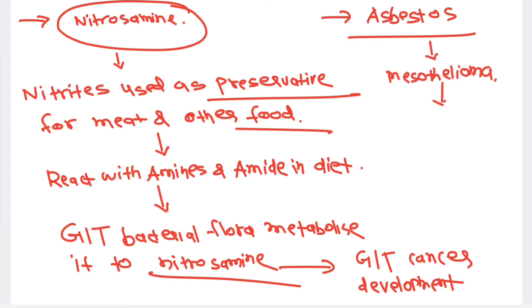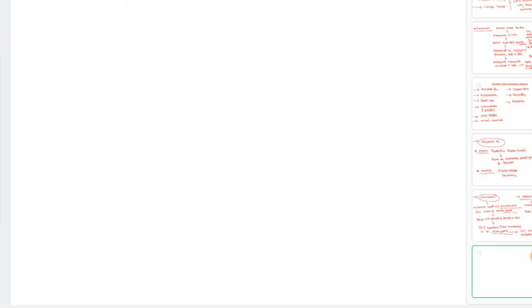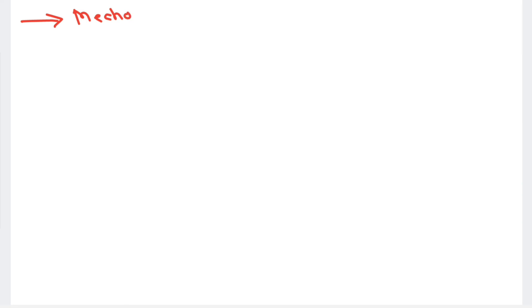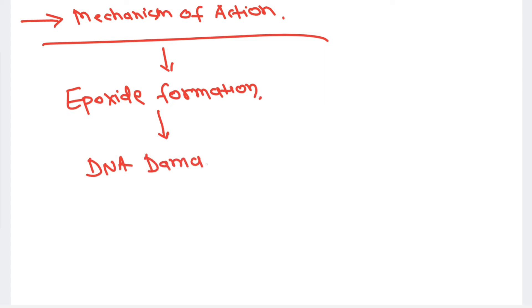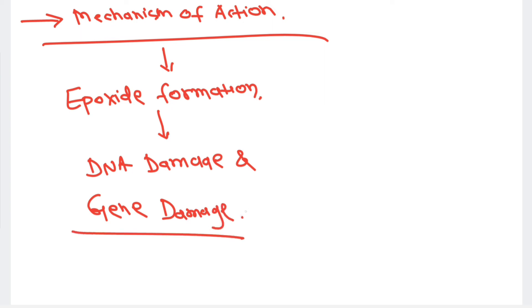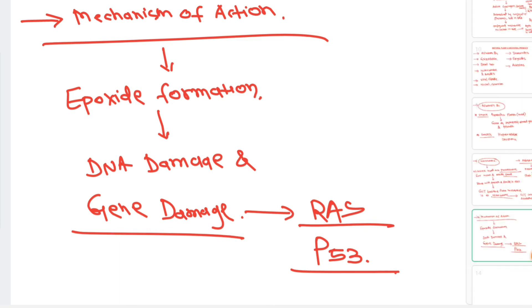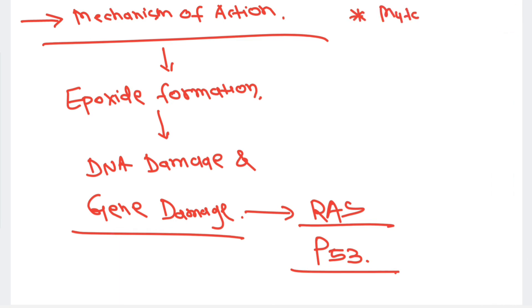Asbestos can cause mesothelioma. The mechanism of action of natural microbial products is the same as other chemical carcinogens: reactive electrophilic epoxide formation leads to reaction with electron-rich substances like DNA and proteins, causing DNA damage and genetic mutation, ultimately leading to cancer. This particularly affects the ras and p53 tumor suppressor genes.